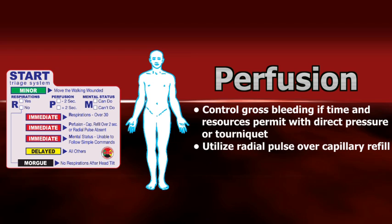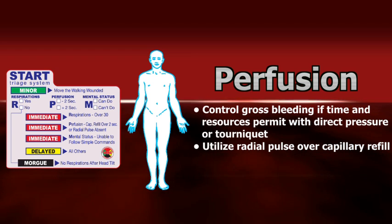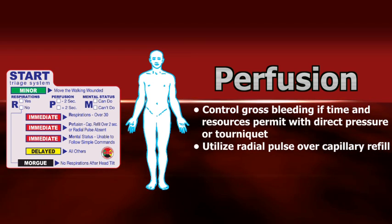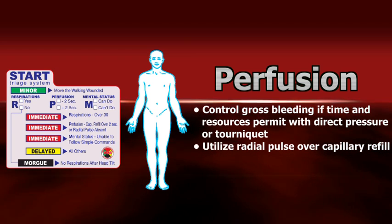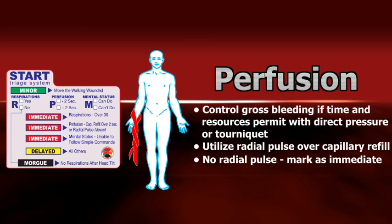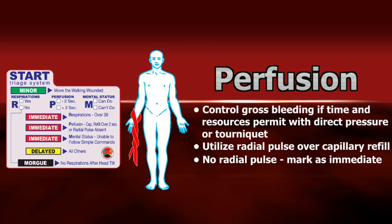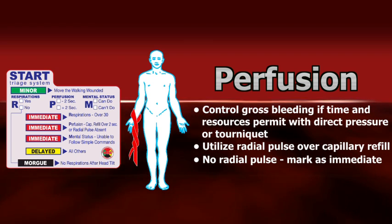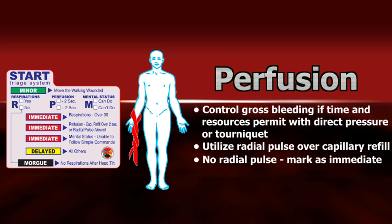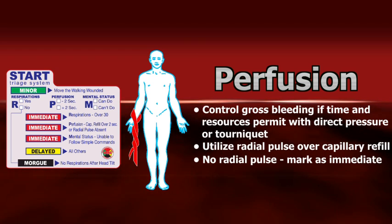The presence of a radial pulse is the most accurate rapid perfusion evaluation tool. While some publications advocate the assessment of the patient's capillary refill, this is not as accurate as a peripheral pulse check. Patients without a radial pulse should be marked immediate or red, then move on to the next patient.